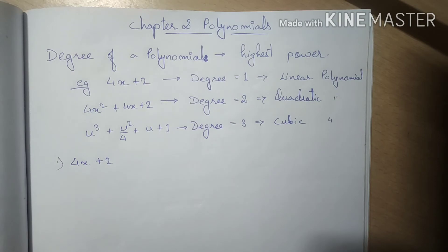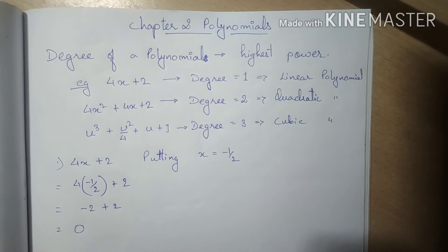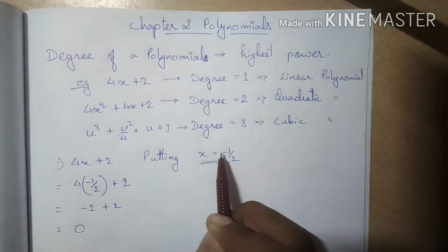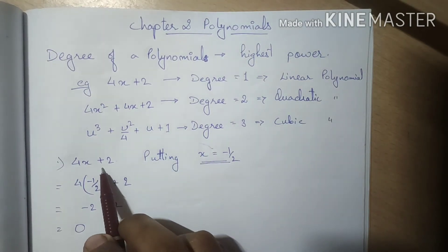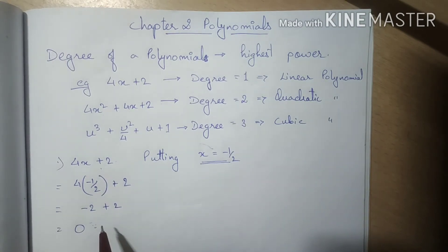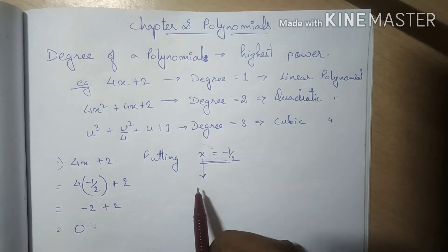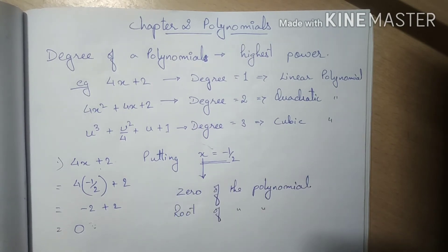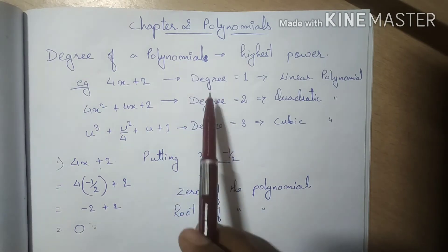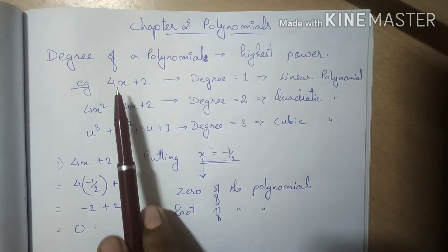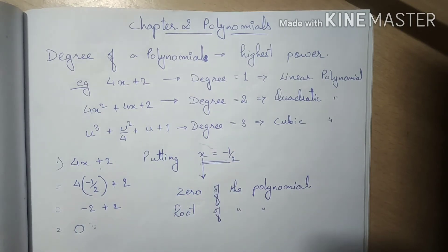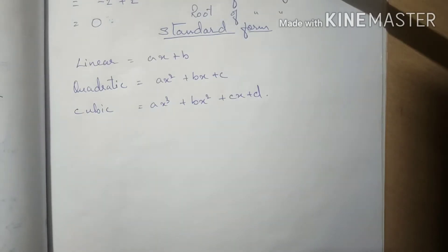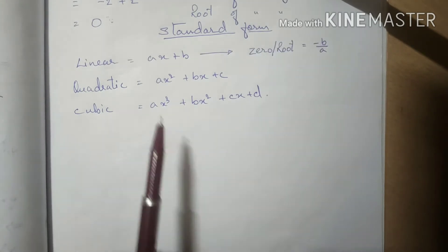Taking the first example, if we put x equal to minus half, the polynomial becomes 0. The value of x for which the polynomial equals zero is called a zero of the polynomial, or a root of the polynomial. The number of roots is determined by the degree: degree 1 has 1 root, degree 2 has 2 roots, degree 3 has 3 roots, and so on.